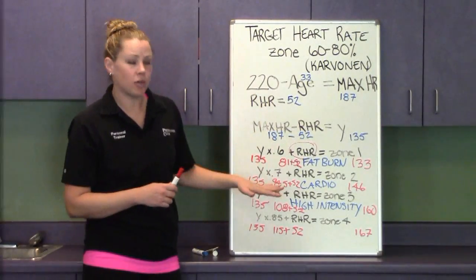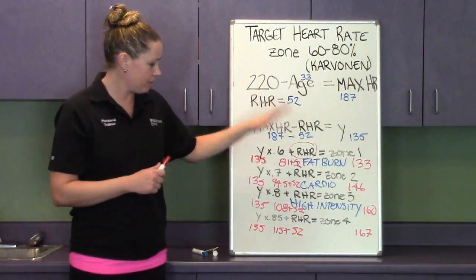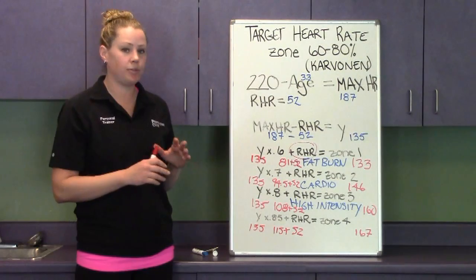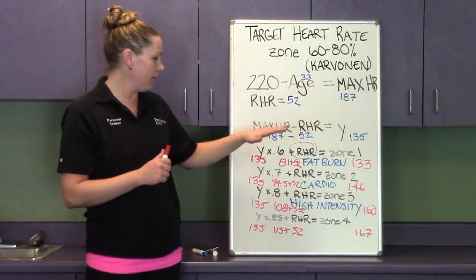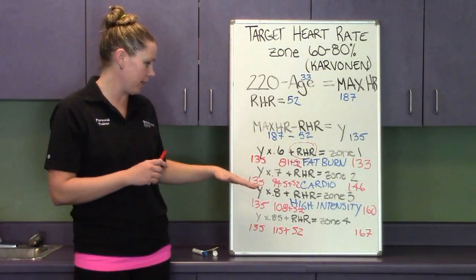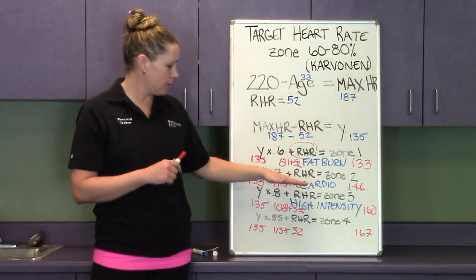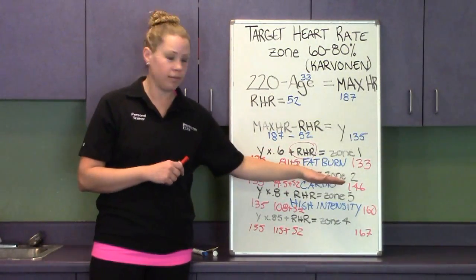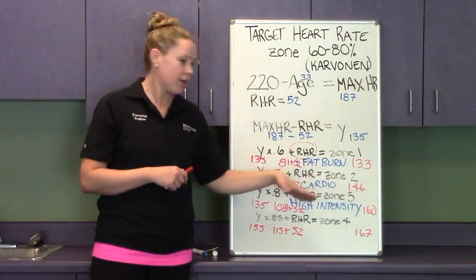Now that we have our zones figured out, we're going to take those numbers and relate it to your workout. Knowing what zone you personally want to work in, let's say you're going to go for a run and you want to be in the cardio zone, you know what your number is, mine's 146.